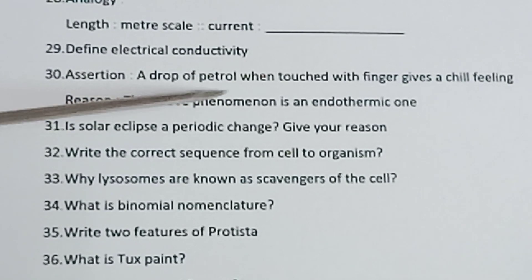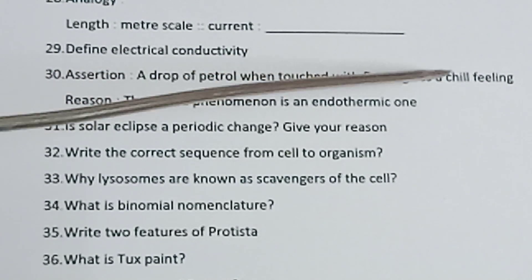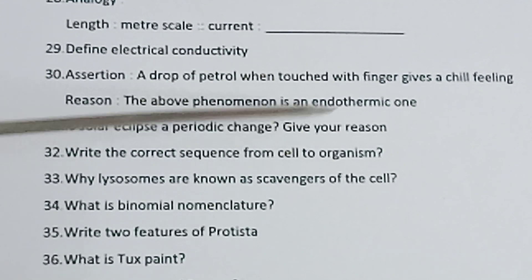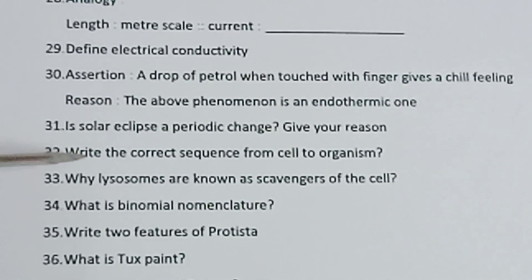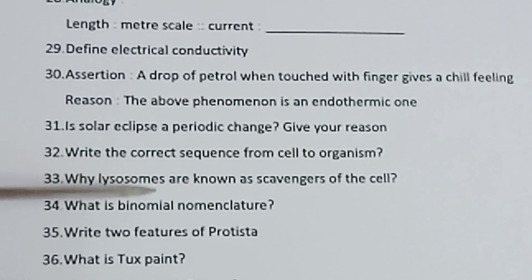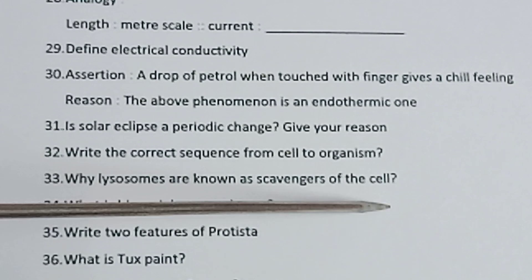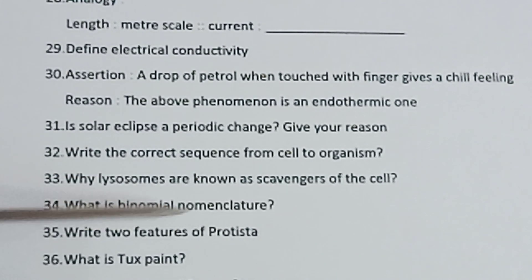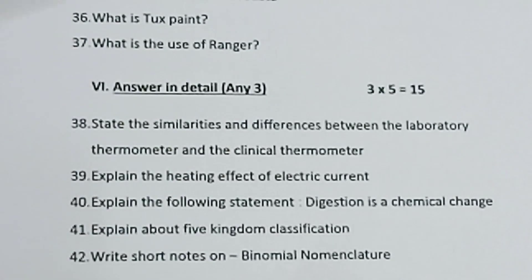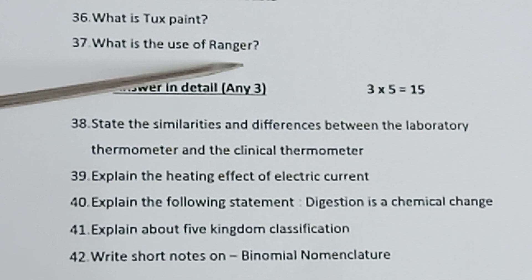Thirty: Assertion — A drop of petrol when touched with a finger gives a chill feeling. Reason — The above phenomenon is an endothermic one. Thirty-one: Is solar eclipse a periodic change? Give your reason. Thirty-two: Write the correct sequence from cell to organism. Thirty-three: Why are lysosomes known as scavengers of the cell? Thirty-four: What is binomial nomenclature? Thirty-five: Write two features of Protista. Thirty-six: What is Tux Paint? Thirty-seven: What is the use of Ranger?